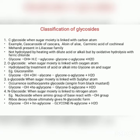Third, S-glycosides: when the sugar moiety is linked with a sulfur atom, giving Glycone–S–Aglycone + H₂O. Fourth, N-glycosides: when the sugar moiety is linked with a nitrogen atom. For example, nucleosides, where the amino group of the base reacts with the OH group of ribose or deoxyribose, ultimately giving the N-glycosidic form. Reaction: Glycone–OH + HN–Aglycone → Glycone–N–Aglycone + H₂O.